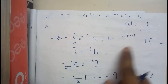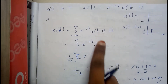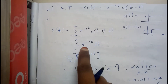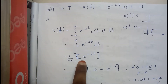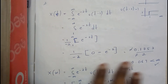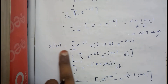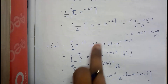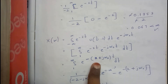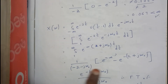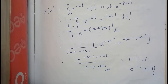For x(t) = e^(-2t) u(t-1), we first check whether the Fourier transform exists: the integral from 1 to infinity of e^(-2t) dt gives (1/(-2)) e^(-2t) from 1 to infinity. Substituting limits gives approximately 0.06, which is less than infinity, so the Fourier transform exists. Then X(ω) = integral from 1 to infinity of e^(-2t) · e^(-jω₀t) dt. Taking (2 + jω₀) common and simplifying — the minus signs cancel — we obtain the final Fourier transform result.